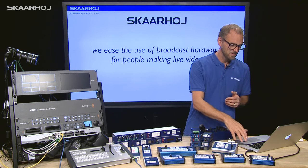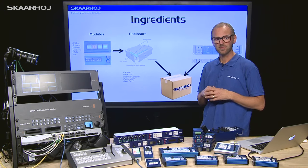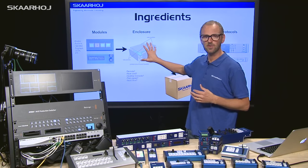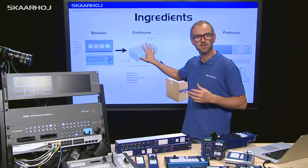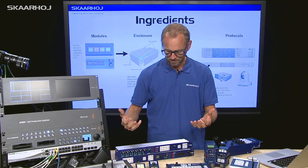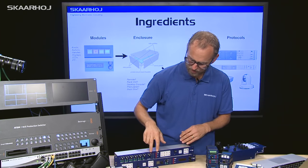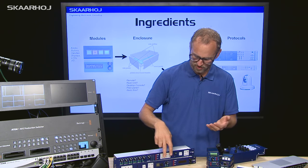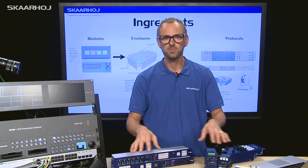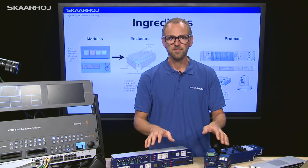If we look at the ingredients of a controller from Skahoy, you find that they consist of an enclosure into which you find electronic modules. So a module would be like this one — that would be a master audio control — and you see that over here too, like many of the button panels, which would also be used in different models.